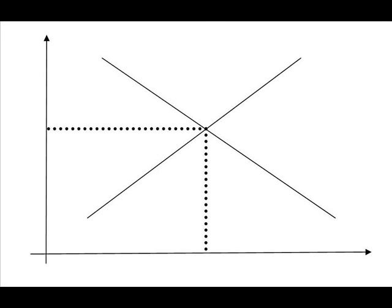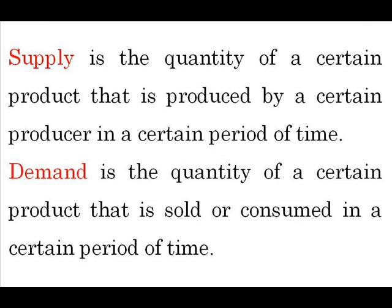What is supply? What is demand? Supply is the quantity of a certain product that is produced by a certain producer in a certain period of time. Demand is the quantity of a certain product that is sold or consumed in a certain period of time. In these definitions, both supply and demand are quantifiable, measurable numbers.